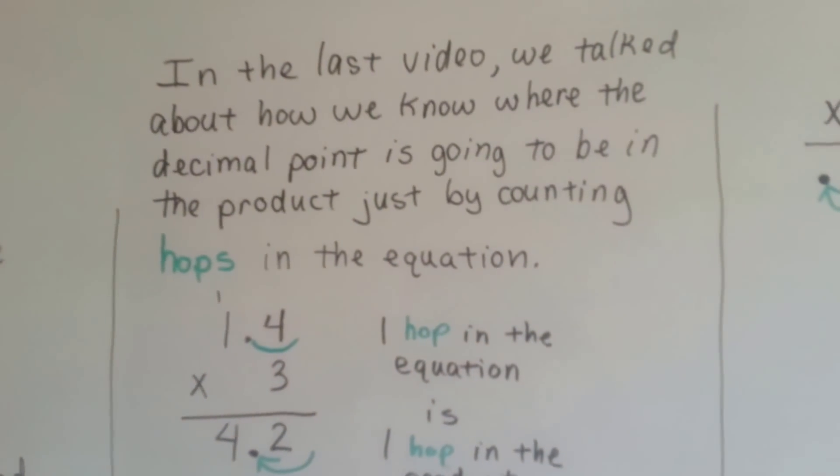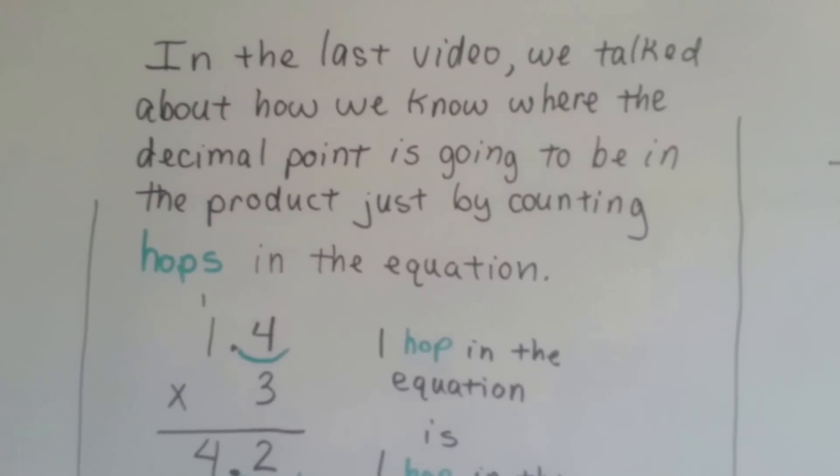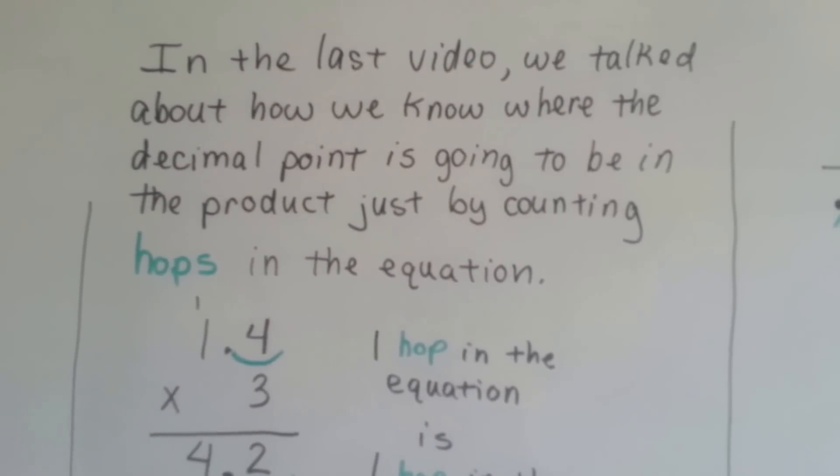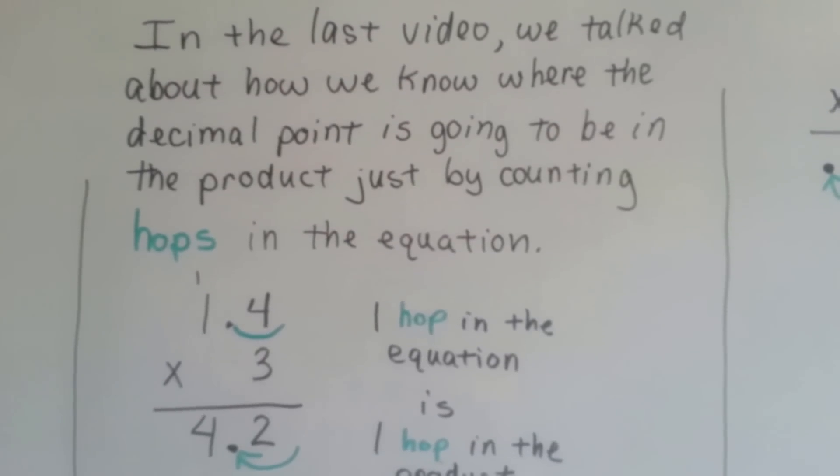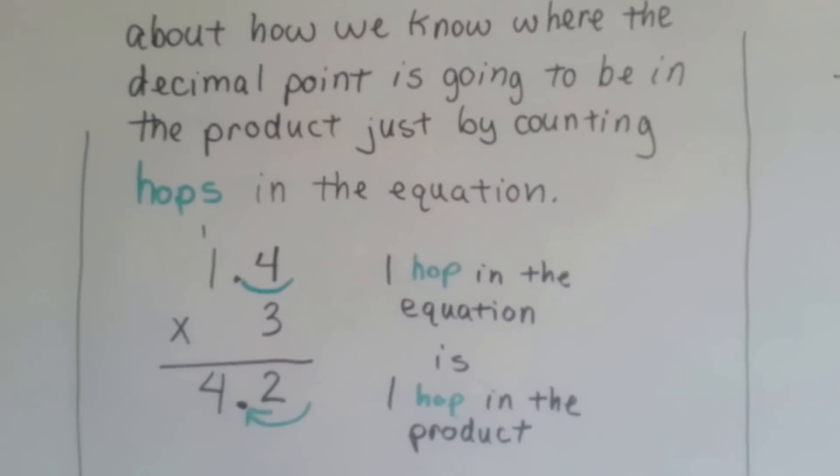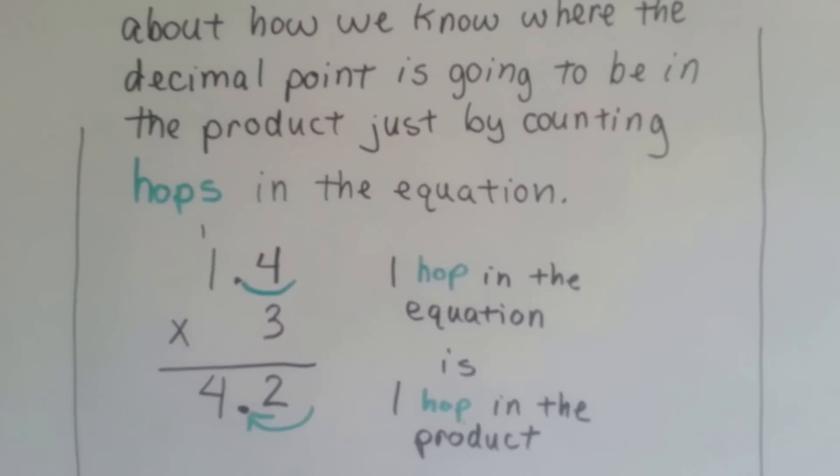In the last video, we talked about how we know where the decimal point is going to be in the product by just counting the hops in the equation. If we had 1.4 times 3, there's one hop in the equation. So there's one hop in the product. See? It'll be 4.2.